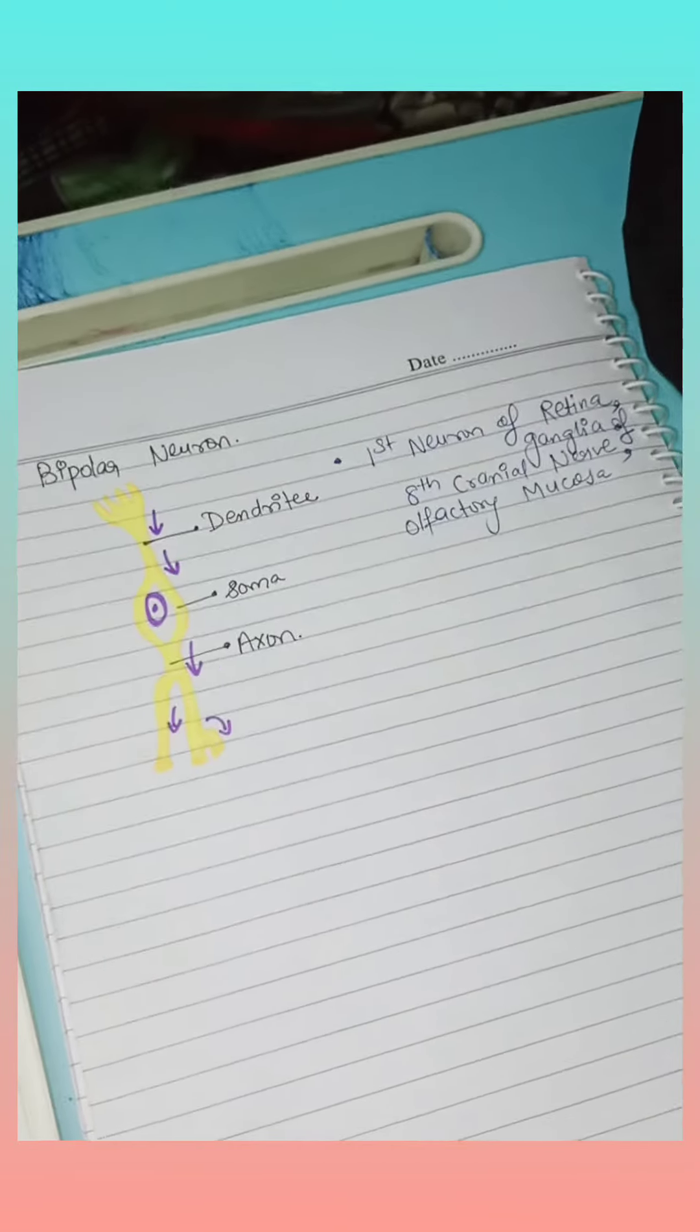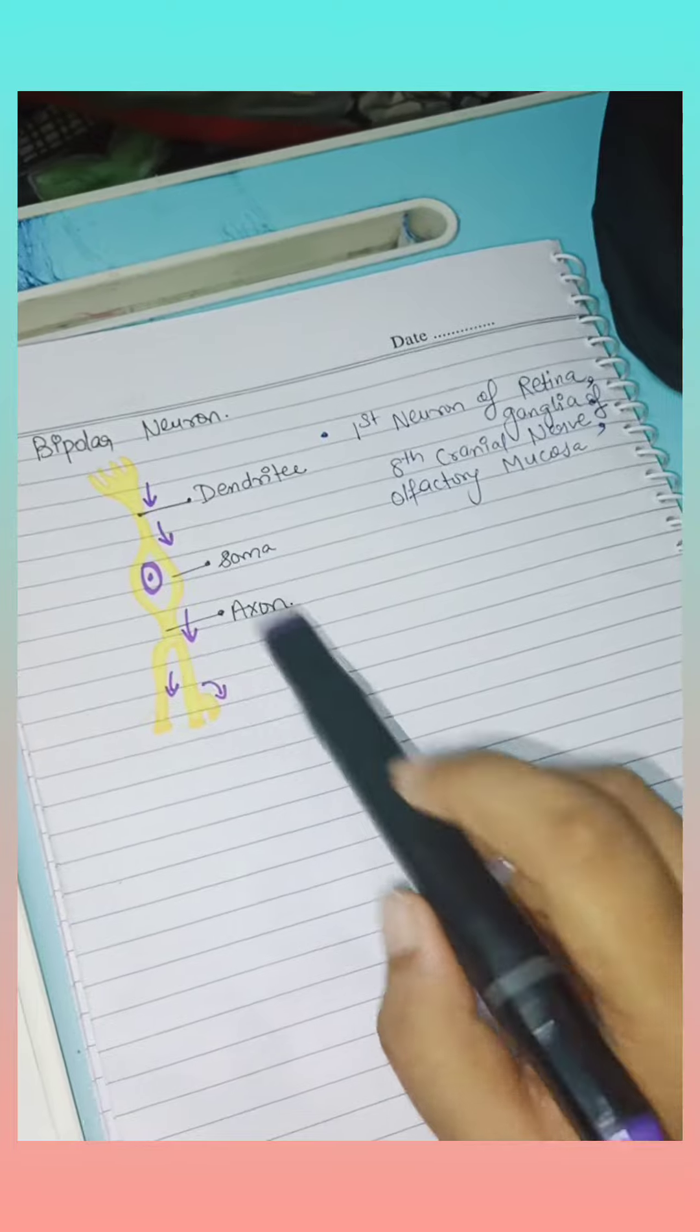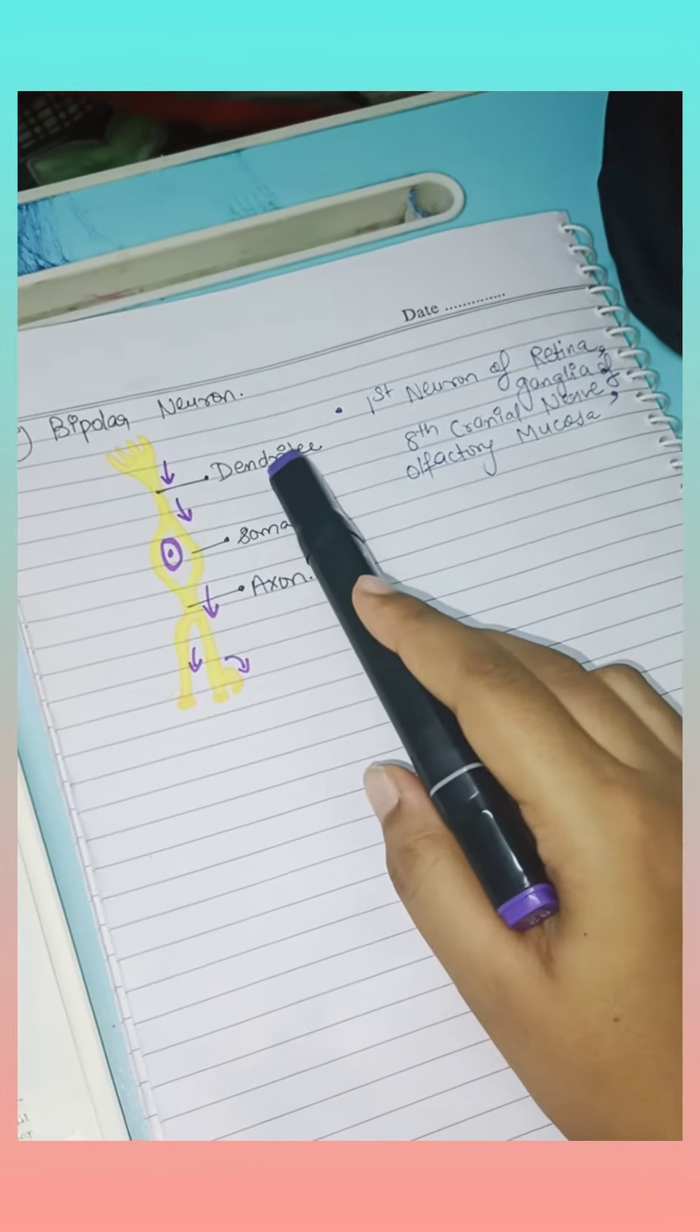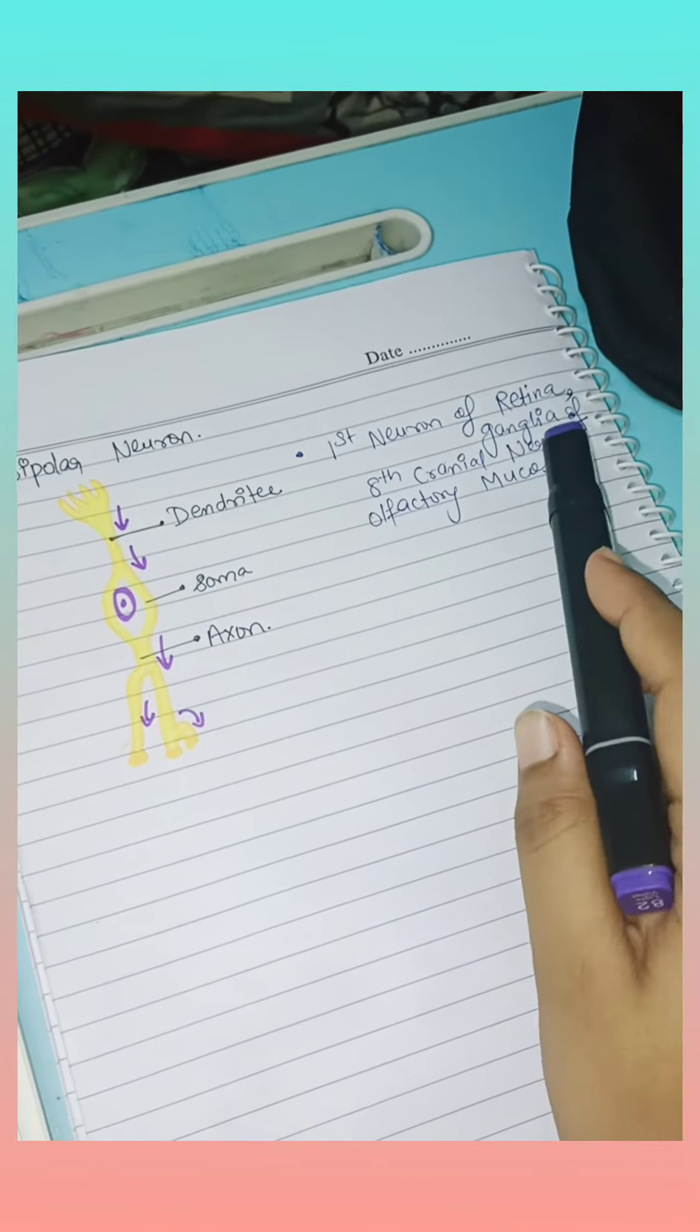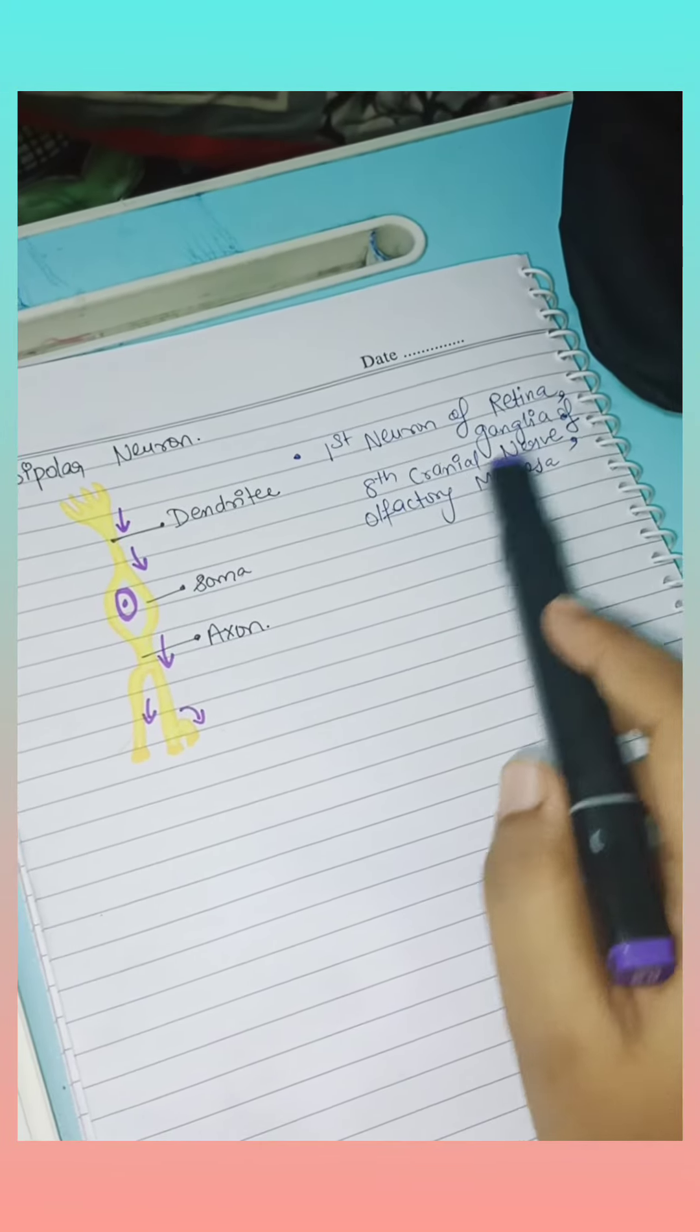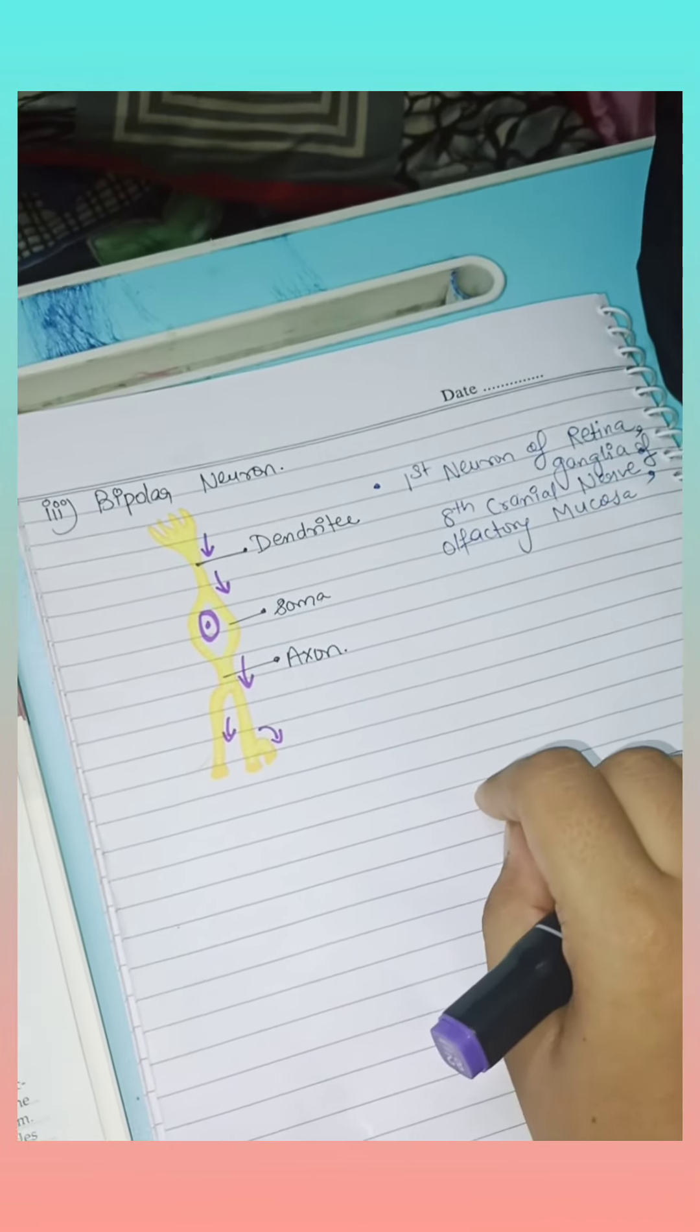That is the bipolar neuron. It has two poles: dendrite, soma (cell body), and axon. It is found in the retina, ganglia of the eighth cranial nerve, and the olfactory mucosa. We have studied three types of neurons. Thank you.